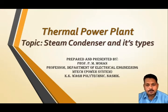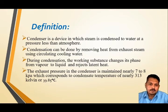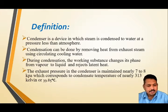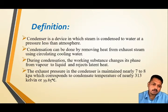Welcome friends. Today I am going to explain about steam condensers and their types. First of all, what is a condenser? Basically, a condenser converts vaporized water or steam into water by extracting heat from the steam. The condenser is mainly designed for converting vapors into water, and the output temperature will be around 330 Kelvin or 39.8 degrees centigrade. Some auxiliary equipment is also required to bring the water down to room temperature.